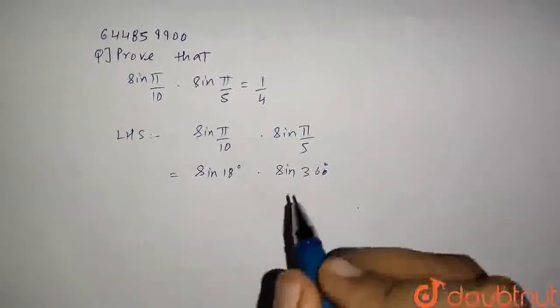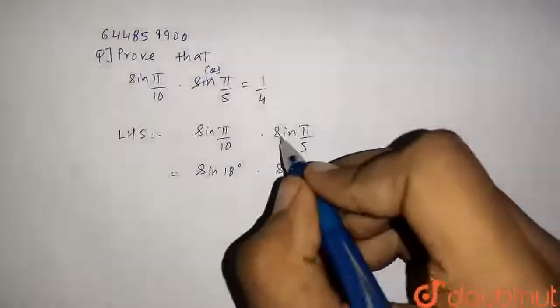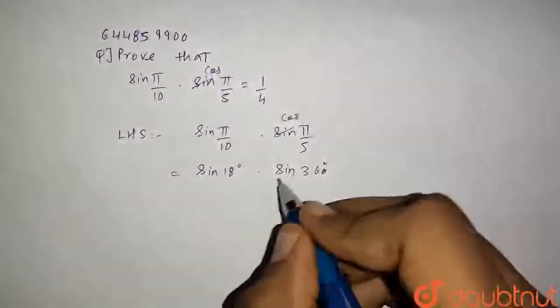Okay, so basically this is not sine here. We have cosine in the question. So this is cosine and this is also cosine. Therefore we have cos(36°) × sin(18°).